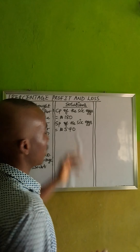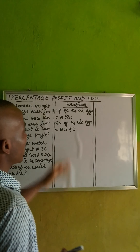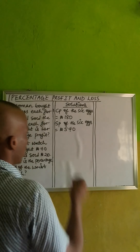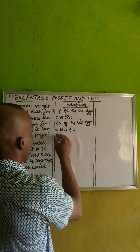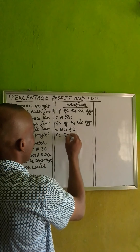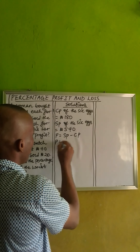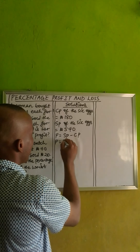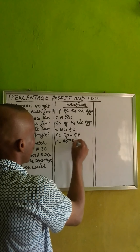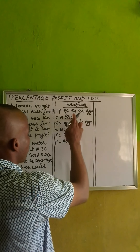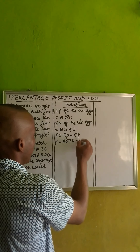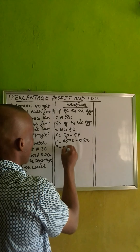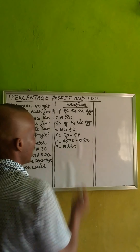We can observe from here that there is a profit. Now, when we get the profit, we then find the percentage of that profit. So let's get the profit. Profit will then be the selling price minus the cost price. The profit will be equals: the selling price is 540 Naira minus the cost price, which is 180. If I subtract this, the profit will be 360 Naira.